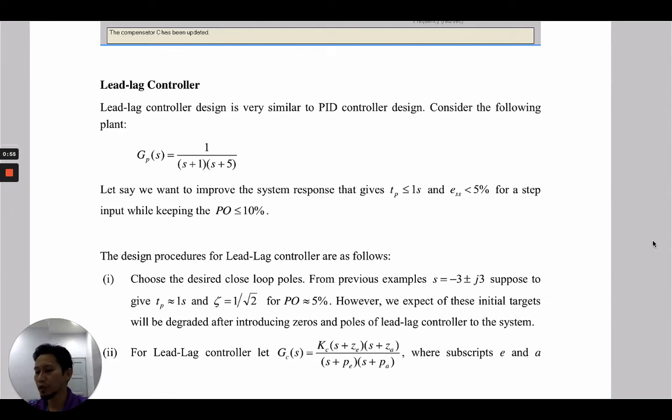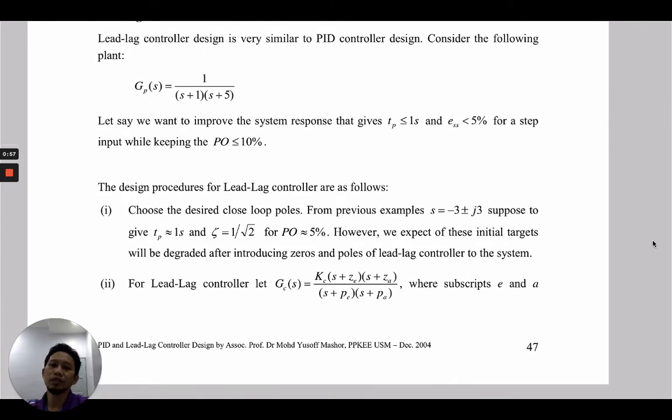The design procedure for the lead-lag controller is as follows. First, we choose the desired closed-loop poles. From the TP less than 1 second and from previous examples, we know that s equals negative 3 plus minus j3 gives us TP about 1 second. At 5% overshoot, zeta is about 0.707. We expect these initial targets will be degraded after introducing zeros and poles of the lead-lag controller to the system.